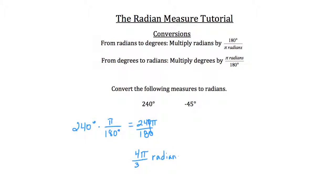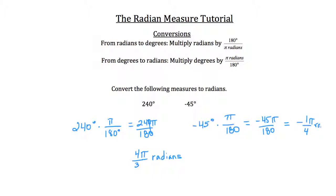Now let's convert negative 45 degrees to radians. We have negative 45 degrees and multiply by π over 180 degrees, giving us negative 45π over 180. Negative 45 over 180 reduces to negative 1 over 4, with π staying on top. So negative 45 degrees converts to negative π over 4 radians.